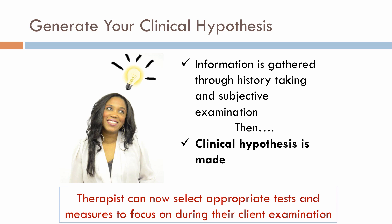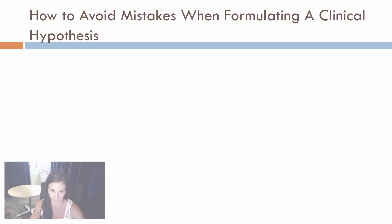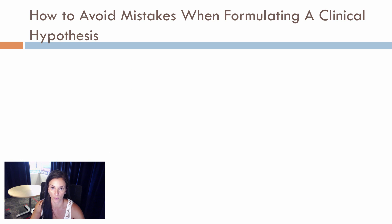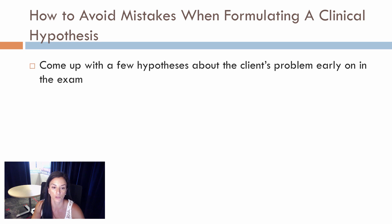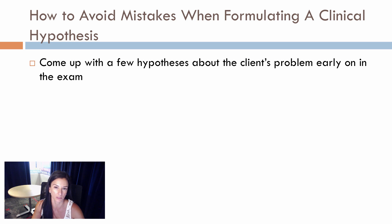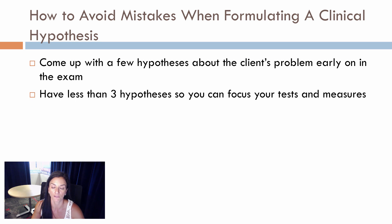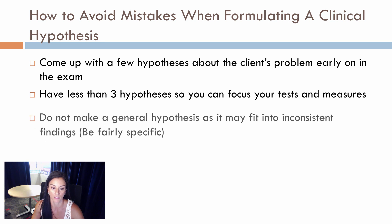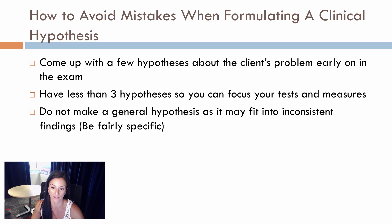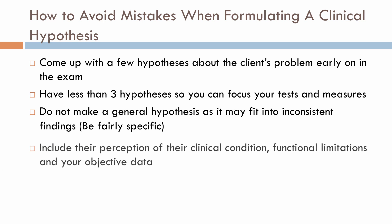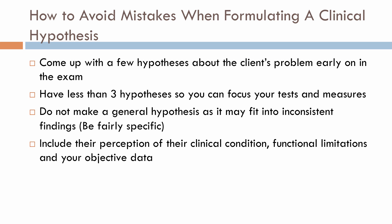You should now be able to select the appropriate tests and measures to focus on during the client examination. When formulating a clinical hypothesis, come up with a few theories about the client's problem early in the exam — no more than three hypotheses — so you can focus your tests and measures. Do not make a general hypothesis as it may fit inconsistent findings; be fairly specific. Be sure to include the client's perception of their clinical condition, their functional limitations, and your objective data.